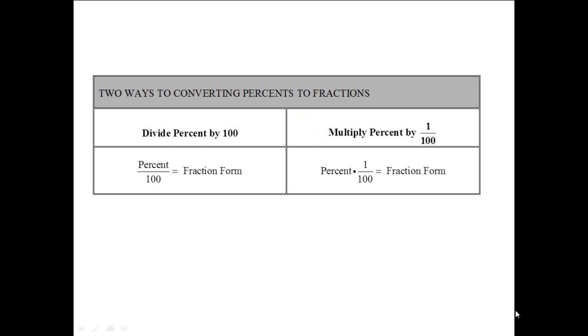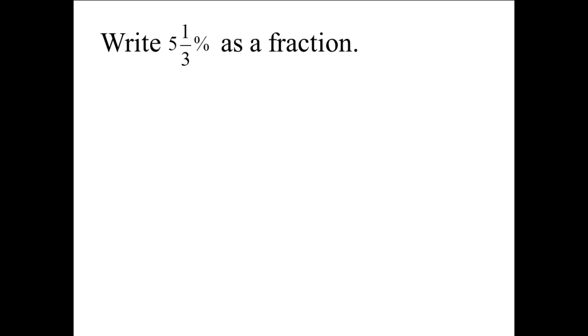There are two ways to convert percents to fractions: divide the percent by 100, or multiply the percent by 1 over 100. Both methods are mathematically the same and will produce the fraction form. In this case we will use the multiplying by 1 over 100 method, because the percent is written as a mixed number. So we will first change this mixed number percent into an improper fraction percent.